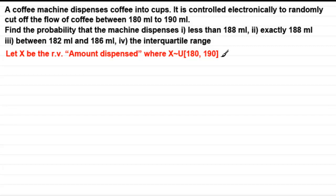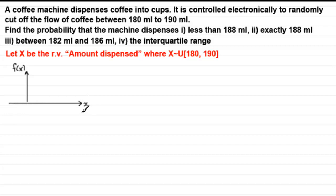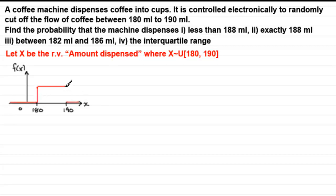Next, let's sketch the graph of the probability density function. I'll label the vertical axis as f(x) and the horizontal axis as x. We know that coffee is dispensed between 180 millilitres and 190 millilitres. Since it's a continuous uniform distribution, it's going to be a horizontal line, because it's equally likely that the machine will dispense any amount between 180 and 190 millilitres. It's zero otherwise, so the graph drops down at 180 and 190.